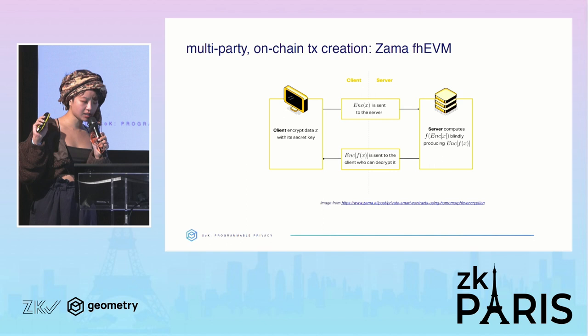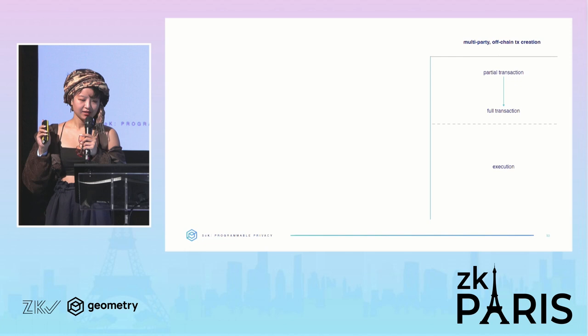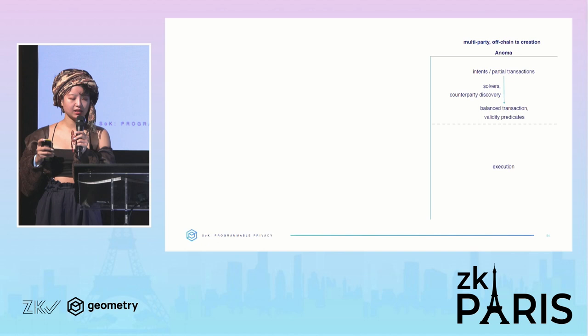Two similar examples are Zama's FHE-EVM and the Secret Network, both of which are fully on-chain. With Zama, you threshold-encrypt to their validators on-chain. With Secret Network, you encrypt to their network of TEE nodes on-chain.